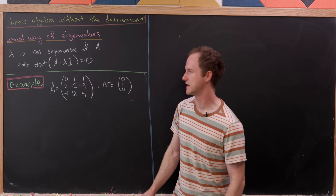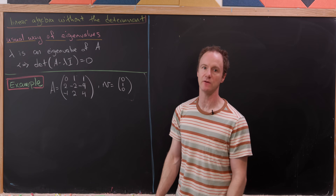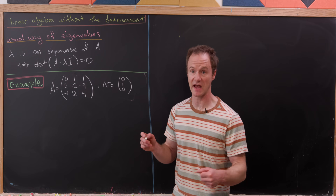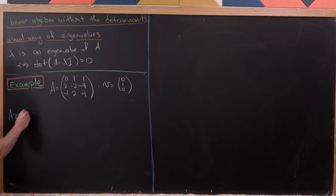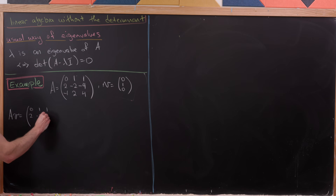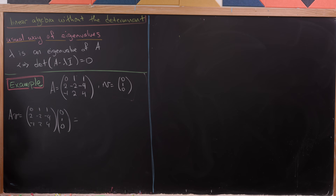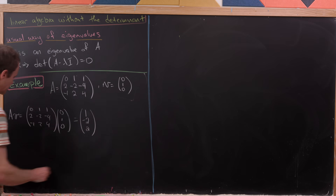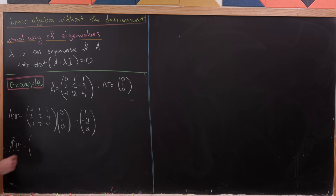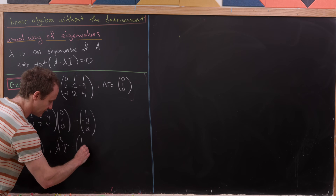For our example, we'll take the matrix A, read row-wise as: [0, 1, 1], [2, −2, −4], [−1, 2, 4], and the vector V = (0, 1, 0). Let's form our set of four vectors, which is guaranteed to be linearly dependent. Computing: AV = (1, −2, 2), A²V = (0, −2, 3), and A³V = (1, −8, 8).